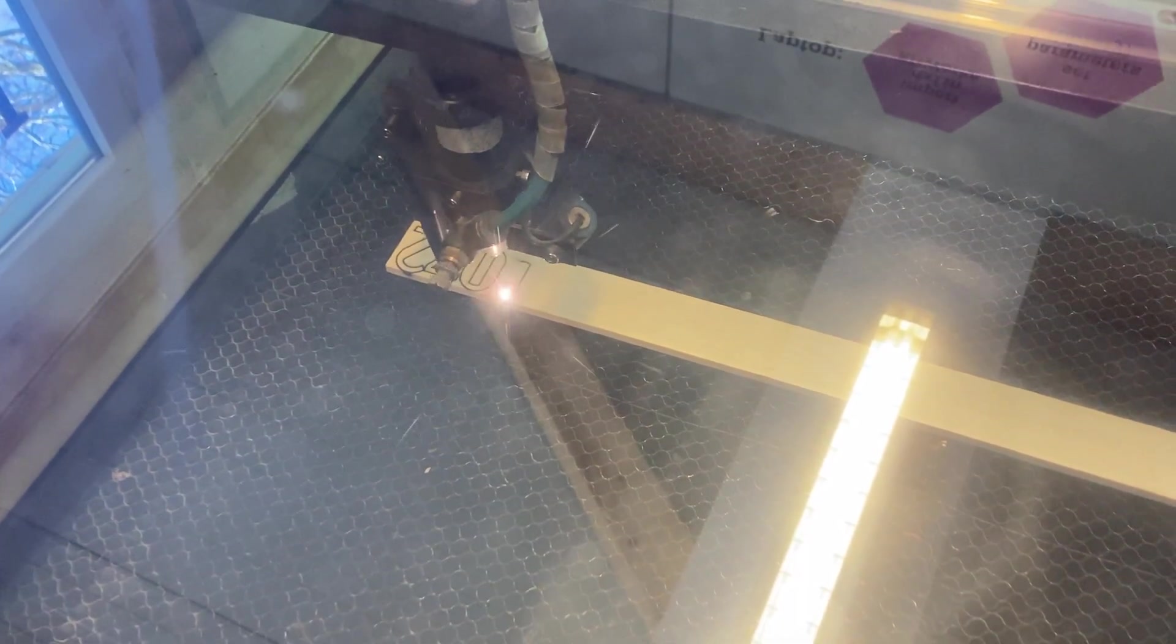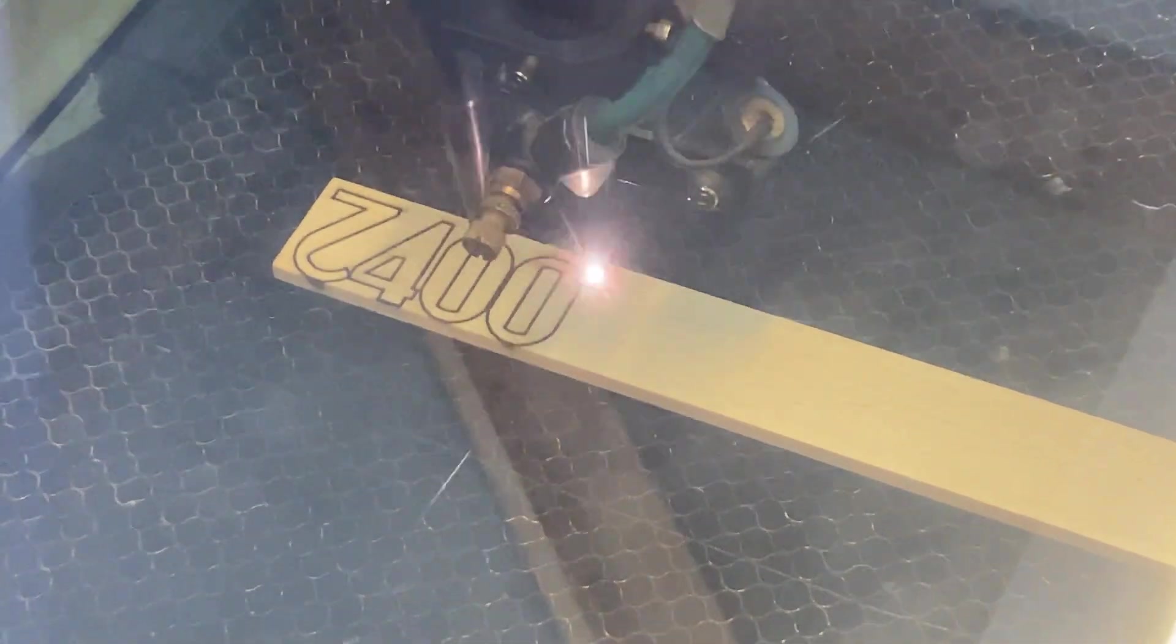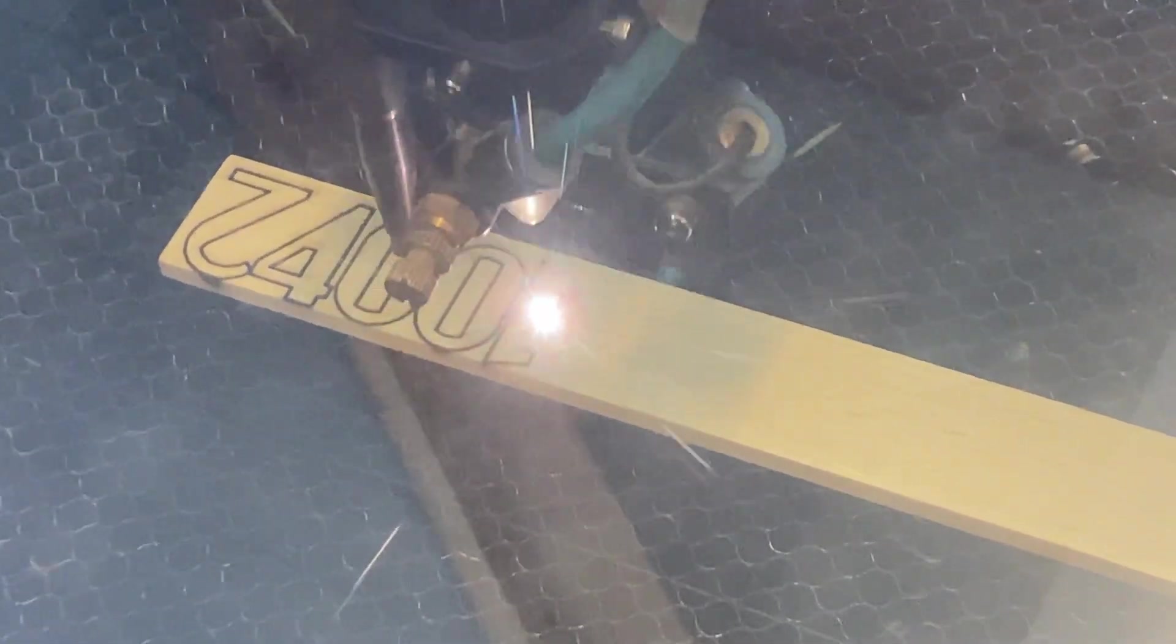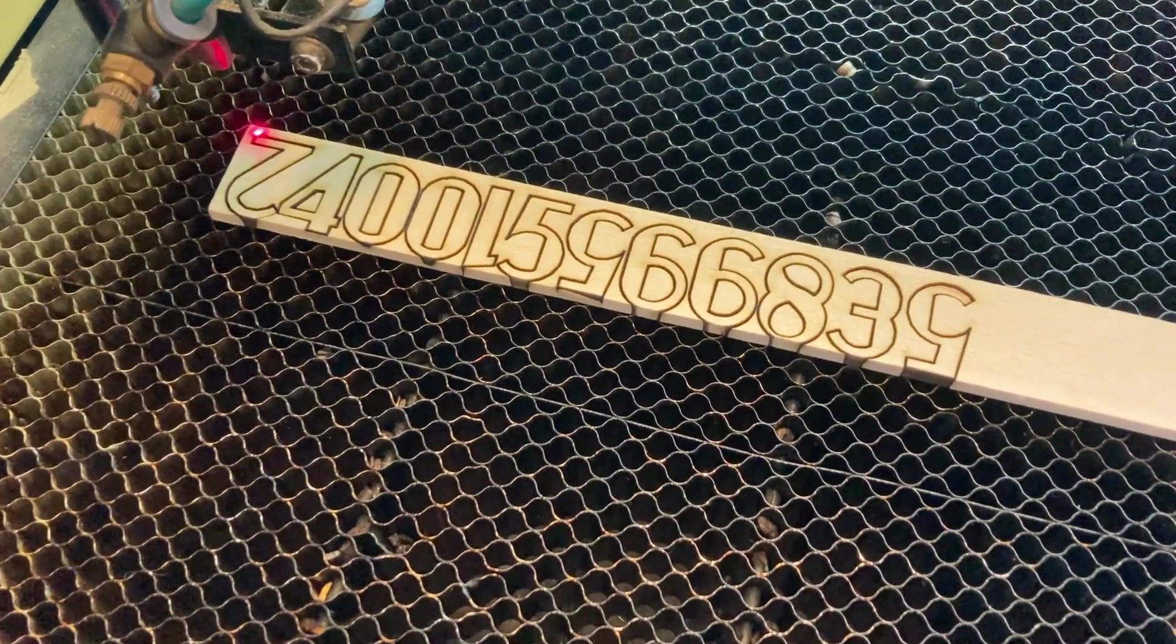The next step was to test if I could cut out the numbers out of beech wood with the CO2 laser cutter and I was surprised how easy that worked out. The numbers came out very clean.